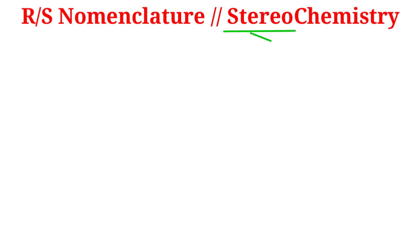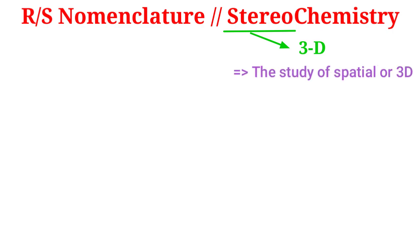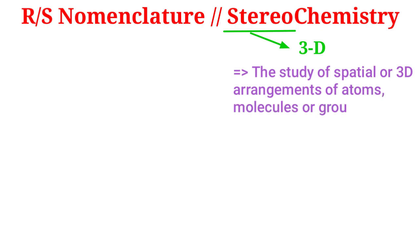Hello friends, welcome back to another tutorial. Today we will learn about the basic concept of RS nomenclature of chiral molecules. Stereochemistry is the study of the spatial arrangement or 3D arrangement of atoms, molecules, or groups.